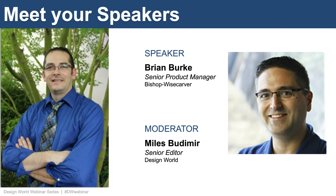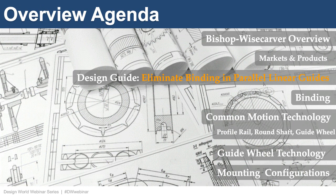Thank you Miles for the great introduction and for being our host today. I'd also like to extend a special thank you to Design World Magazine for promoting this webinar. The topic of the webinar today is a design guide to eliminate binding in parallel linear guides. Guide wheel-based linear bearings with crowned running surfaces are designed to accommodate misalignment in parallel configurations of linear guide rails and can be quickly assembled onto less accurately prepared mounting structures without binding.